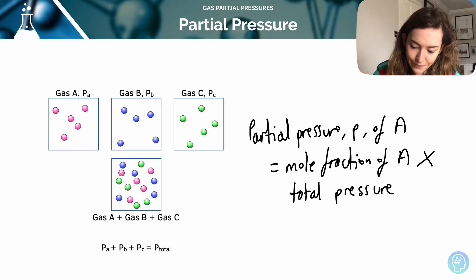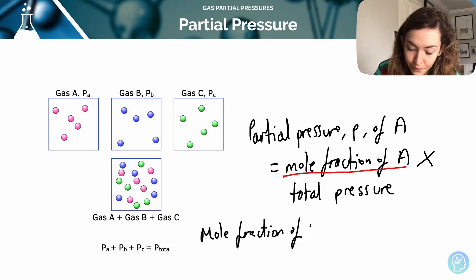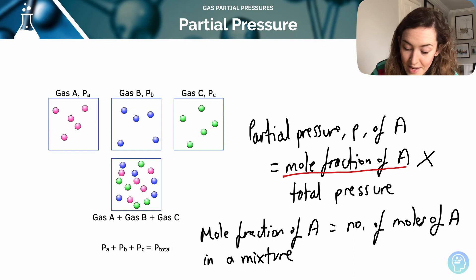What's the mole fraction? So in order to get this function here, we have to do a calculation first. So the mole fraction of A is the number of moles of A in a mixture divided by total number of moles in the mixture.